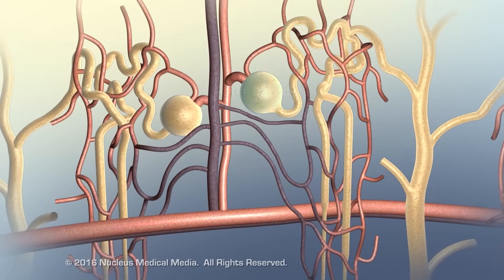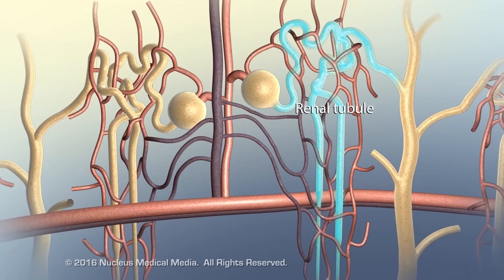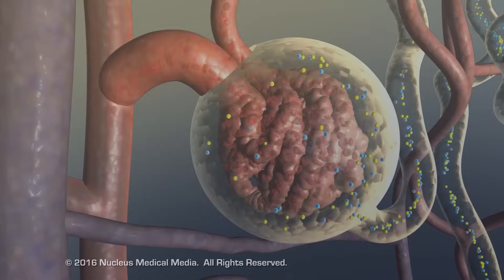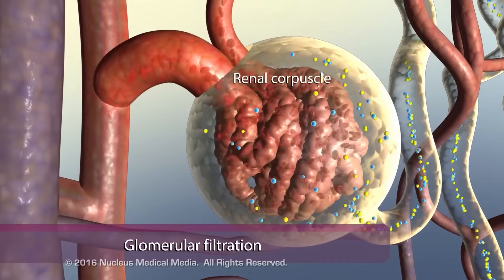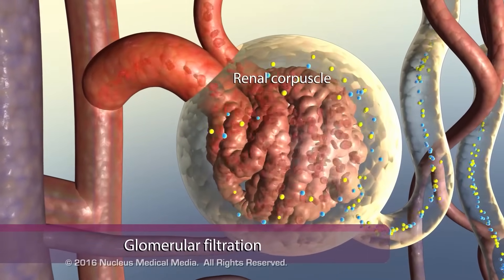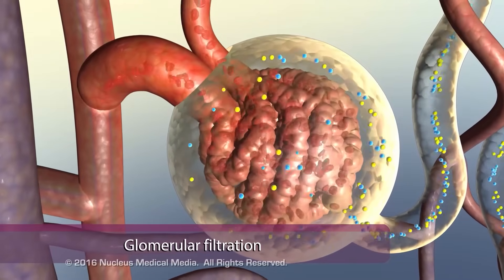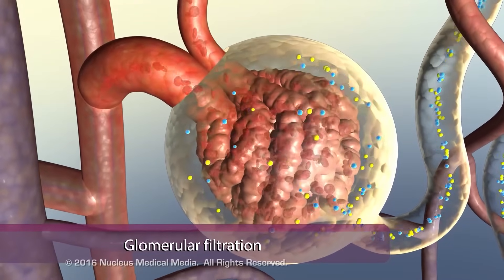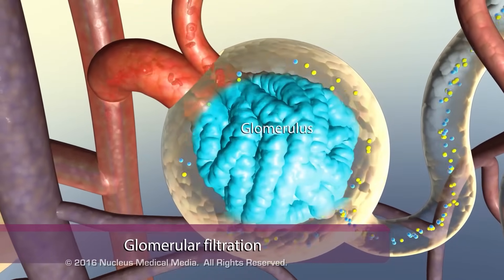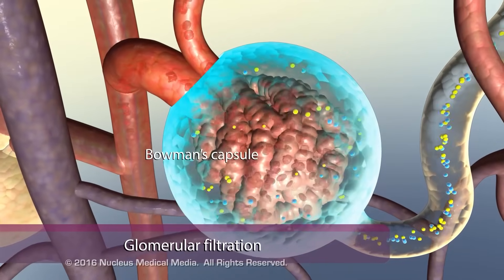Each nephron consists of a renal corpuscle and a renal tubule. The first step of urine production, called glomerular filtration, occurs in the renal corpuscle. It consists of a network of capillaries, called the glomerulus, and Bowman's capsule.